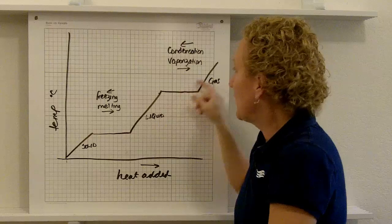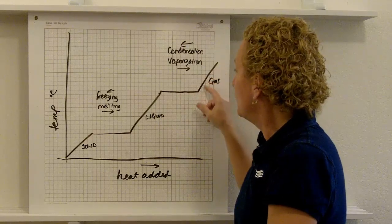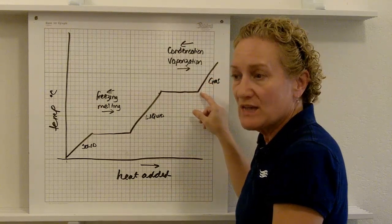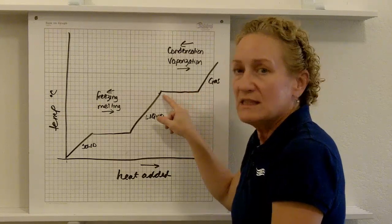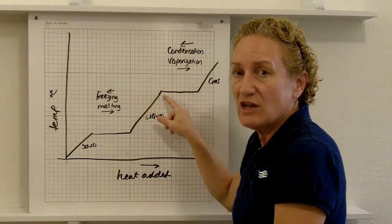We can do it in the reverse direction. You have steam, you're cooling it, the temperature goes down. You're going to reach a point where even though heat is being removed from the system, the temperature is not changing. That's called condensation.